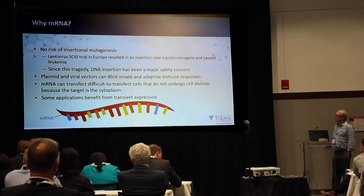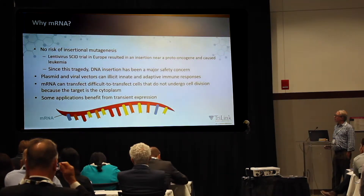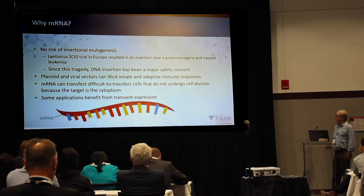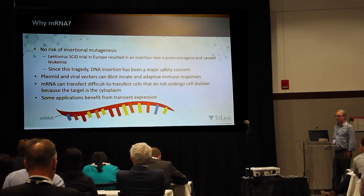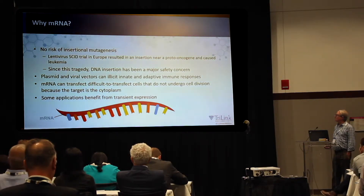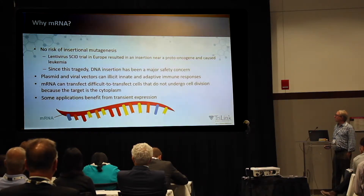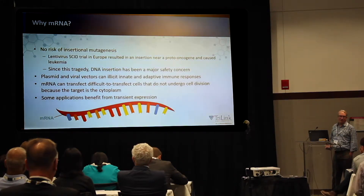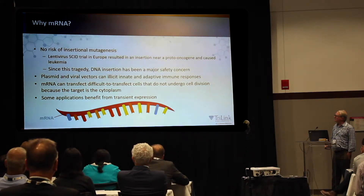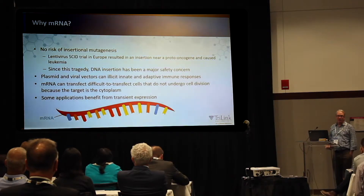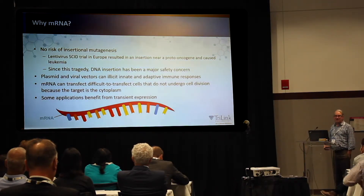The primary reason to use messenger RNA is that there's no risk of insertional mutagenesis. There was a famous SCID trial with lentivirus in Europe that cured bubble boy disease, but an insertion of the lentivirus near a proto-oncogene caused leukemia in a number of the children. Since that tragedy, regulators have been really preoccupied with the potential for integration of DNA into the genome and causing insertional mutagenesis.